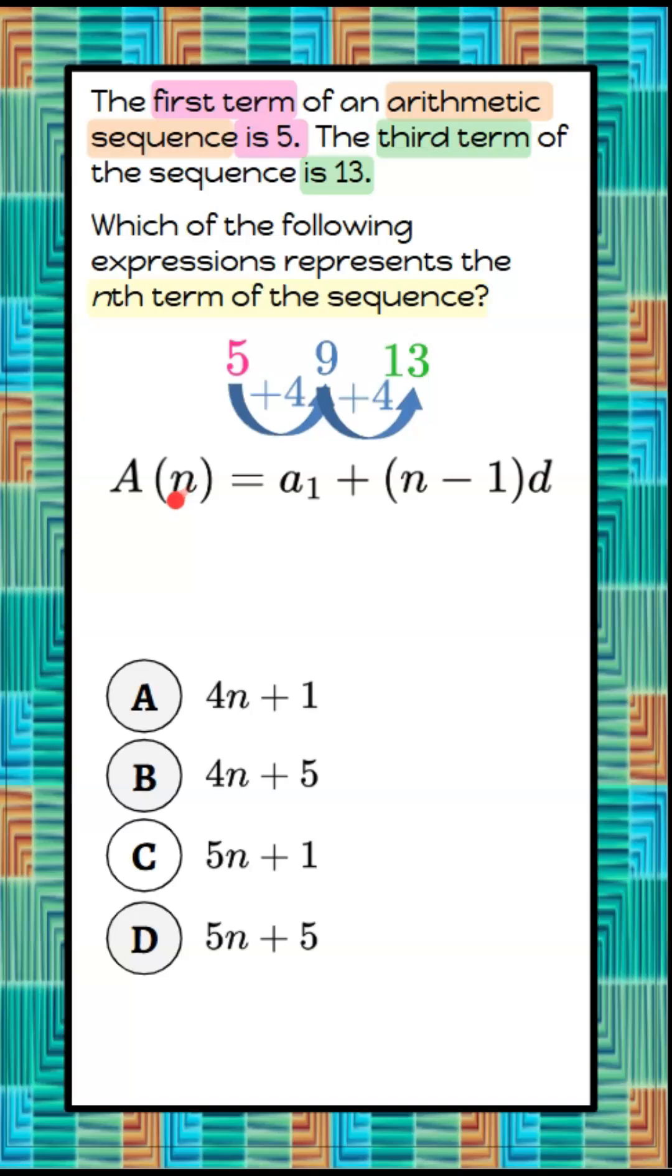We know that an arithmetic sequence is equal to the first term of the sequence. This A subscript 1 names the first term, which we know to be 5. So we're going to start with 5, and we're going to add n minus 1 times d. 1 over here represents finding the next term. We already know one term, so we're going to take away that 1 and find the next term, n minus 1. And d here represents the common difference.